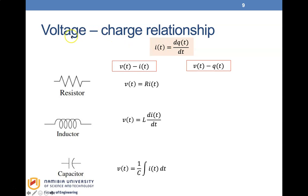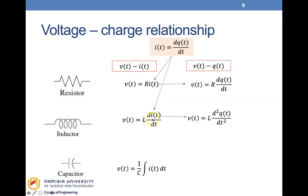We can also express the voltage-charge relationship, knowing that current is the differential of charge Q, so I = dQ/dt. Wherever we have current I, we replace it with dQ/dt. For the resistor, inductor, and capacitor, we substitute accordingly to arrive at the voltage-charge relationships for each element.